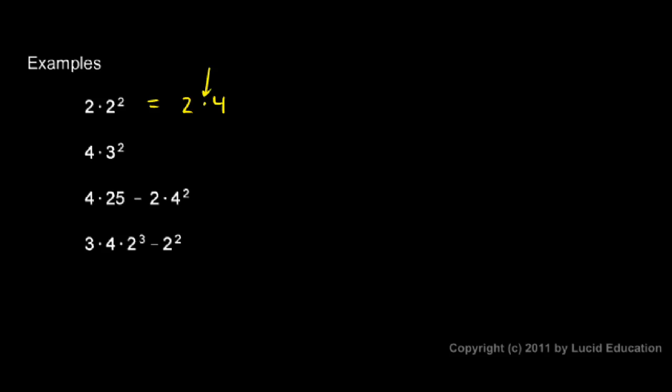So now I do the multiplication. 2 times 4 is 8. And that's a different answer than if we had done this. If we had done the multiplication first, we would have a 4 squared, which would be 16. In the absence of parentheses, we do the exponent first.